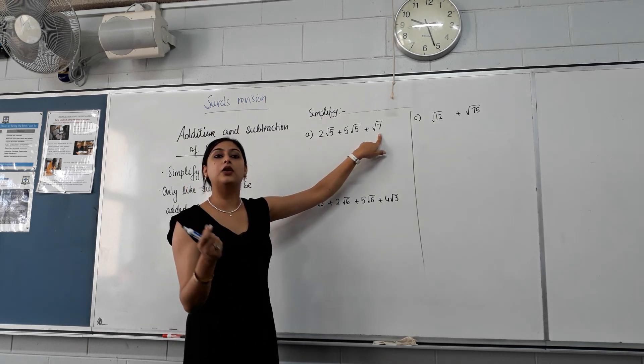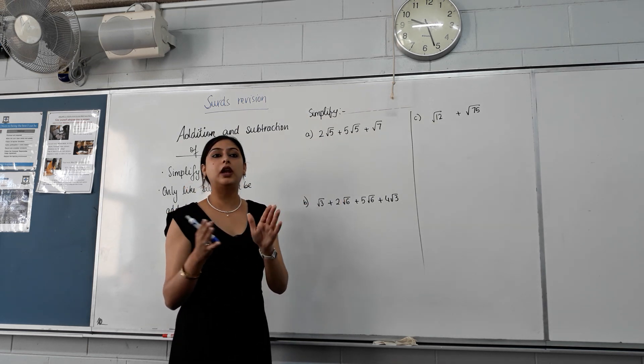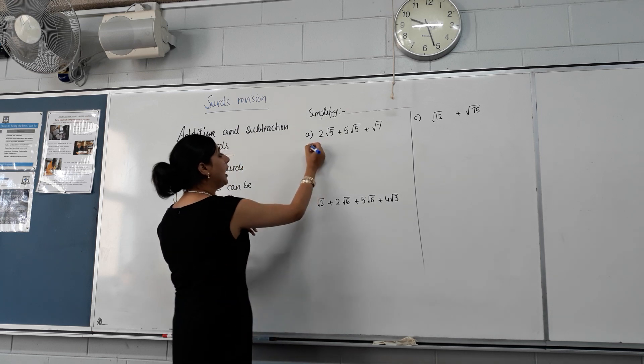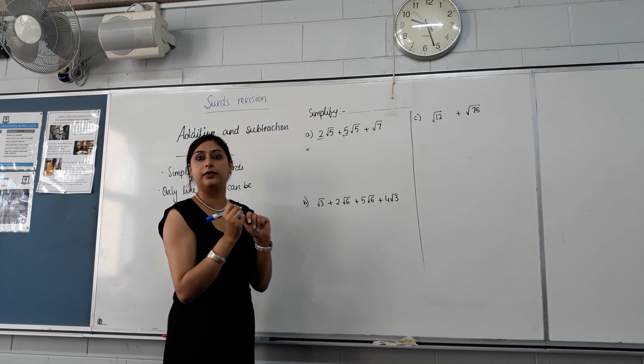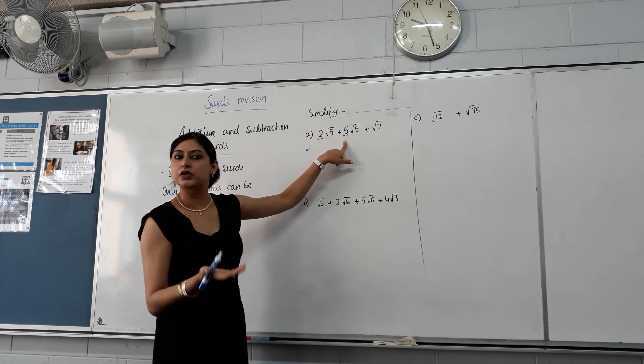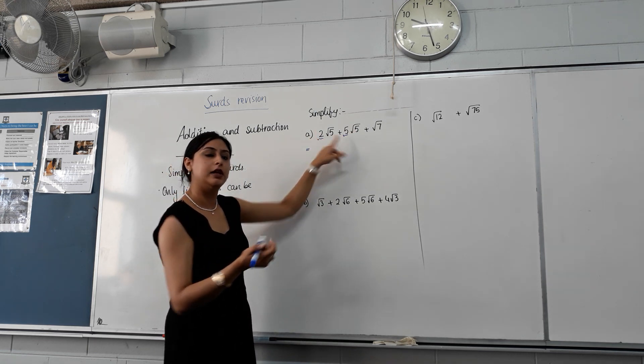You must add or subtract like surds only. If they're not like, all you can do is add the like ones. So you've got two lots of root five and five lots of root five. So two plus five is seven. So how many root fives do we have? Seven.